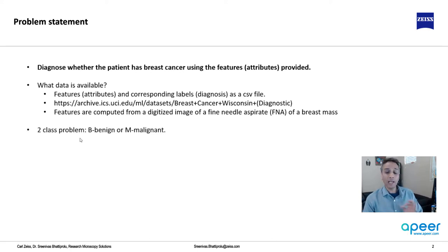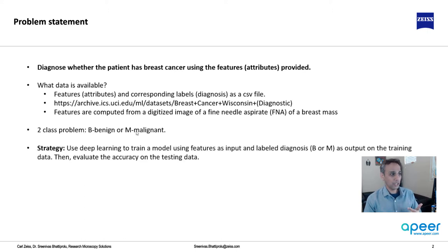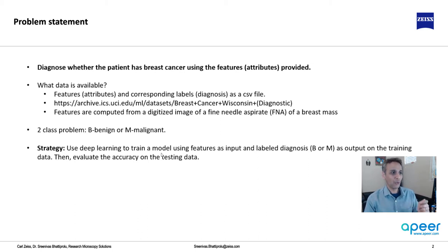This is a two-class problem. Either this breast mass, by looking at that image and its attributes, is benign or malignant. That's it — this is a binary problem. Our strategy is we are going to use deep learning, not so deep, but deep learning to train a model using the features as input.